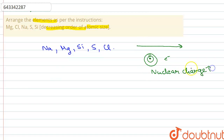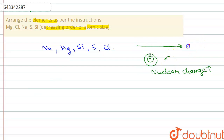Because of the increased number of electrons as you go from left to right, there is an increase in the nuclear charge. Because the nuclear charge is increased, the nuclear attraction towards the electrons in the outermost shell also increases, and the nucleus attracts the outermost shell towards itself — so the size of the atom decreases as you go from left to right.